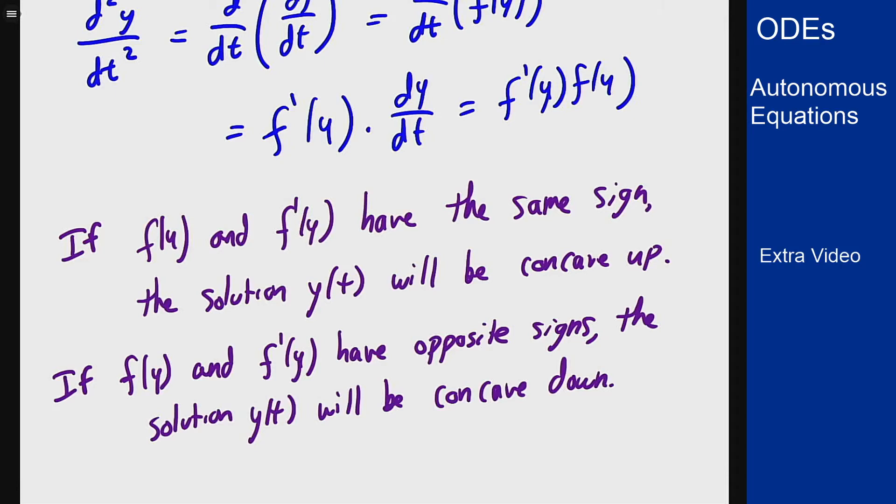Now what this can really tell us is that between each pair of equilibrium solutions there's going to be some sort of inflection point in terms of y where the graph will flip from being concave up to concave down or vice versa. Why is that the case?